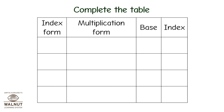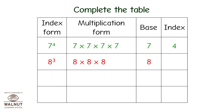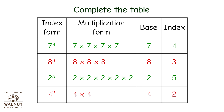Complete the table with index form, multiplication form, and base and index. 7 raised to 4: multiplication form is 7×7×7×7, base is 7, index is 4. 8 raised to 3: multiplication form is 8×8×8, base is 8, index is 3. 2 raised to 5: multiplication form is 2×2×2×2×2, base is 2, index is 5. 4 raised to 2: multiplication form is 4×4, base is 4, index is 2.